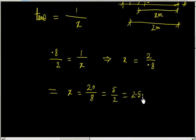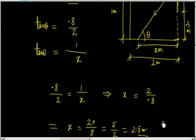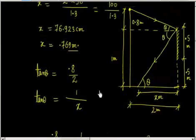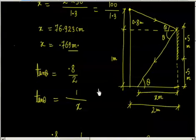Since x is 2.5 meters and the person is only 2 meters away, this means the reflected ray from the top of the mirror goes beyond the person's position. So the last ray from the top lands beyond point P.